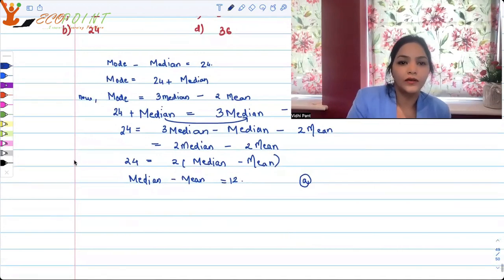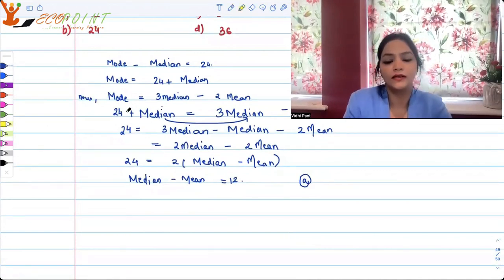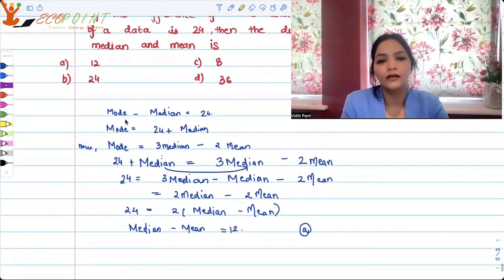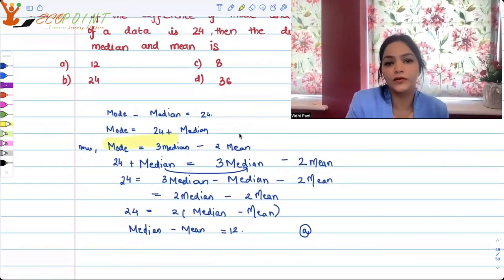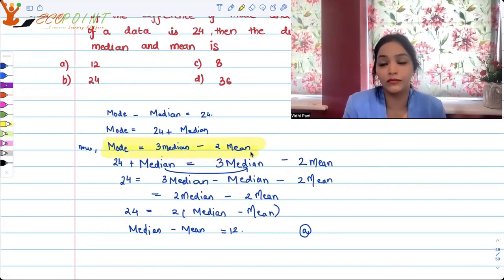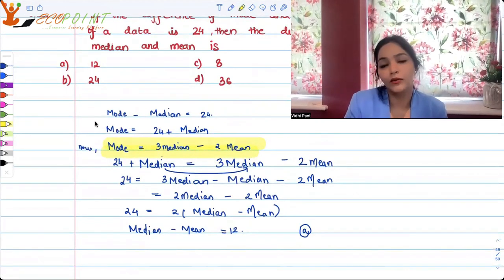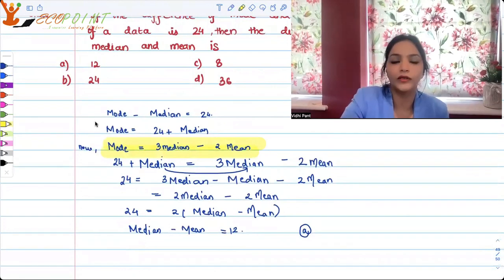So what I wanted you guys to actually revise with this — I would urge you guys to go back and revise these small little formulas, the relationship between mean, median, and mode. That's an important one you could be questioned upon.